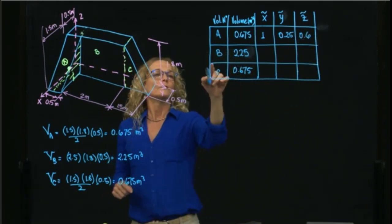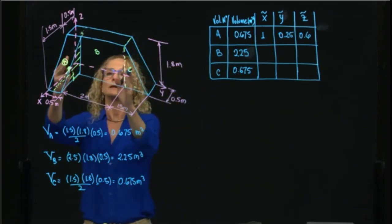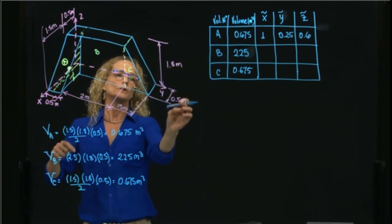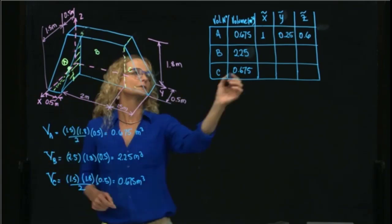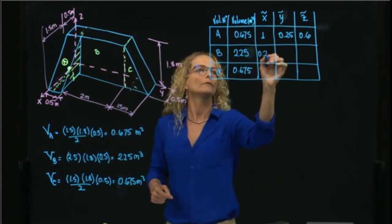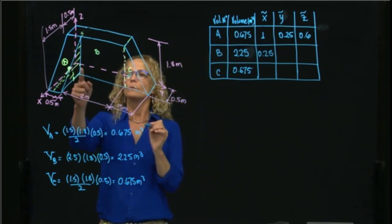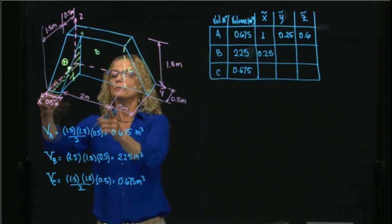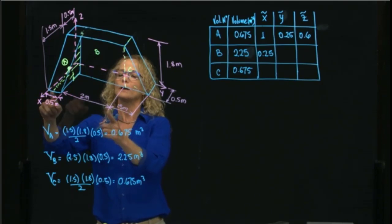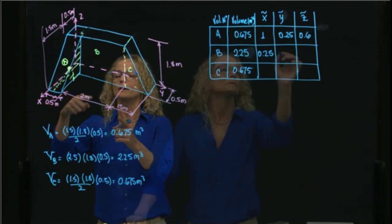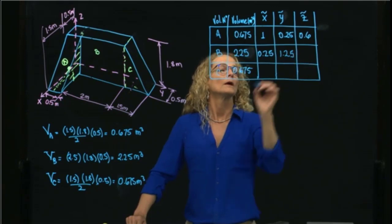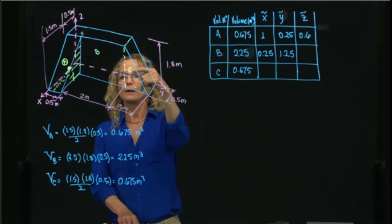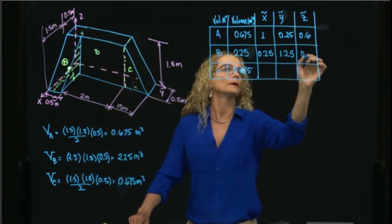For volume B, the rectangle: X is half the depth, which is half of 0.5, giving 0.25. For Y, it is in the middle of the rectangle — 2 plus 0.5 is 2.5 — so Y is 1.25. And Z is the middle of the height, which is 1.8 divided by 2, giving 0.9.